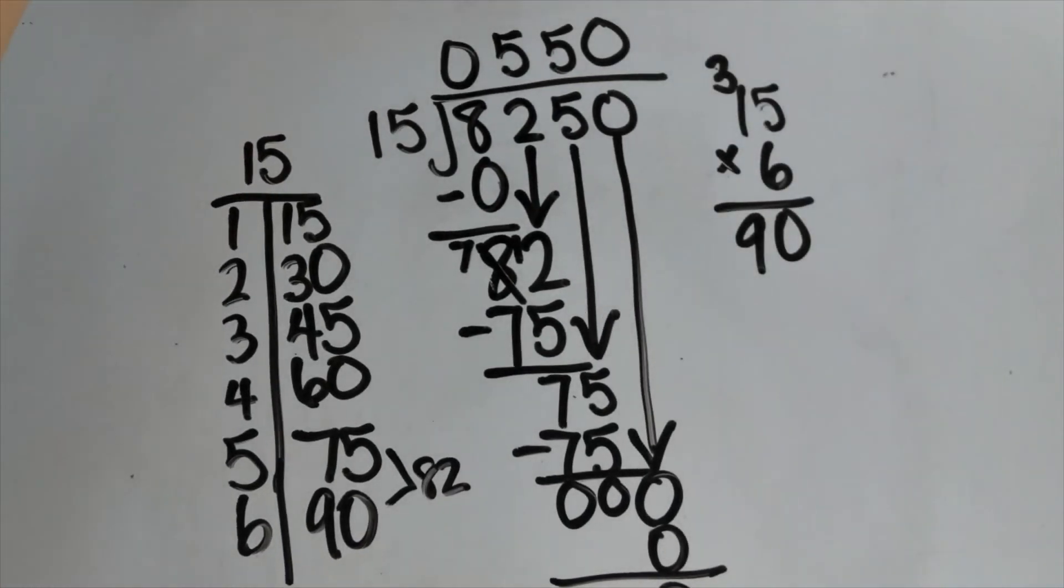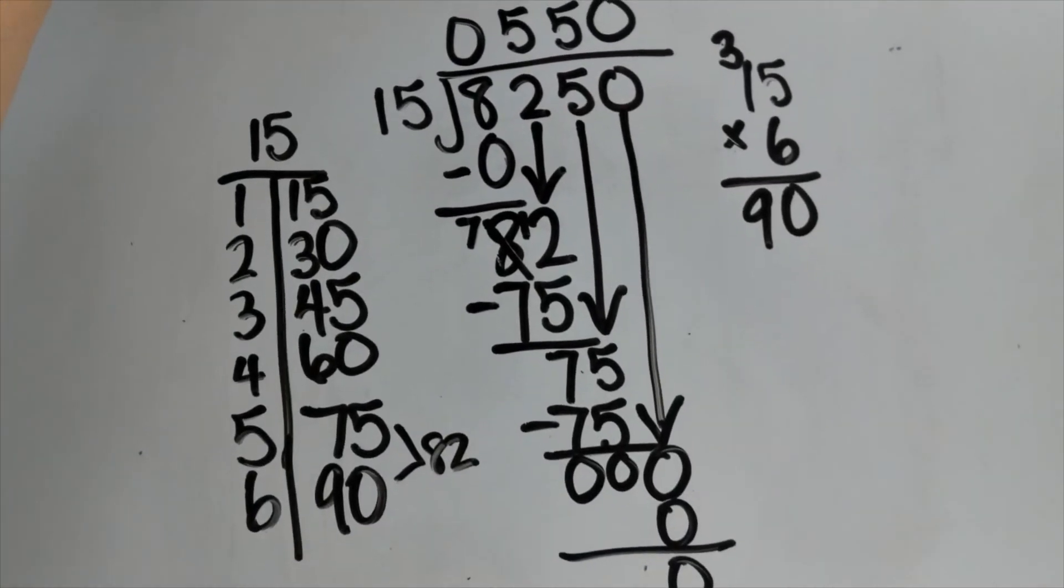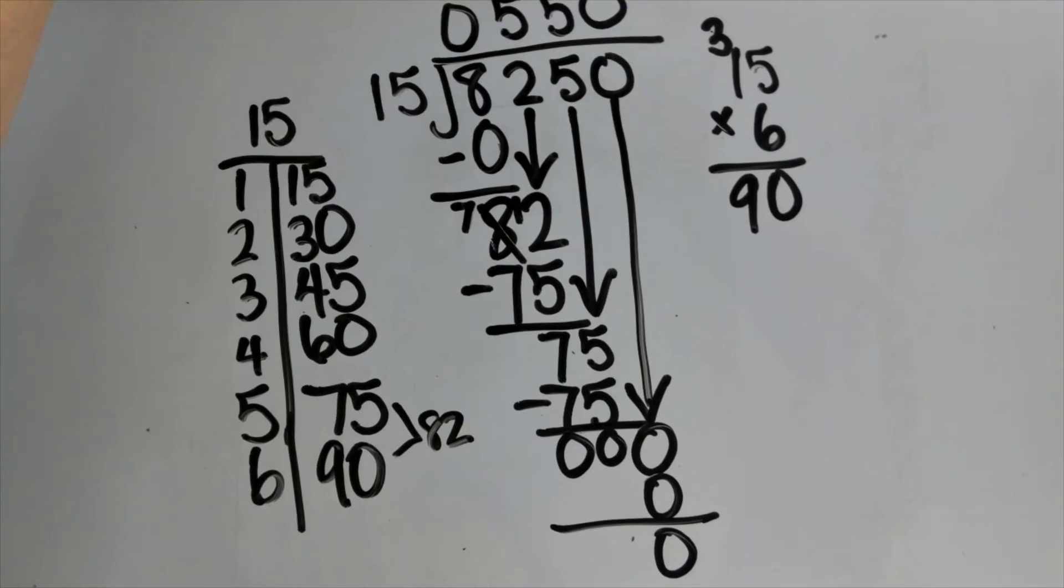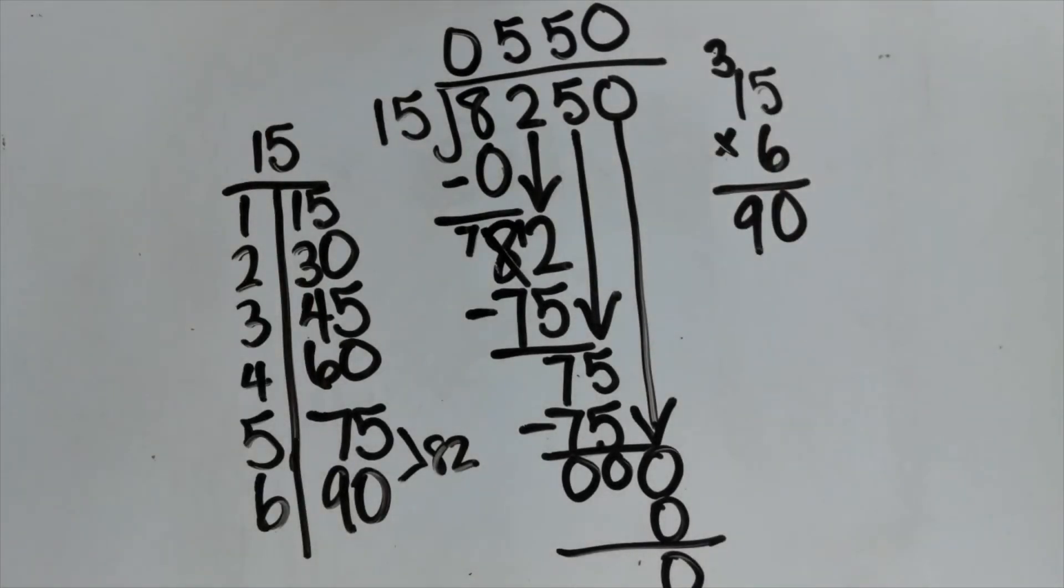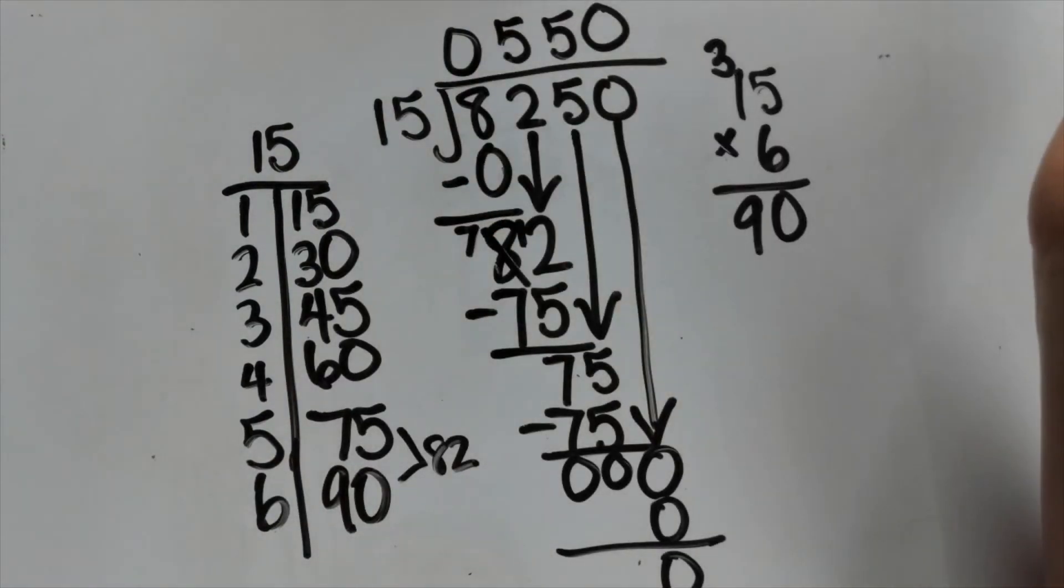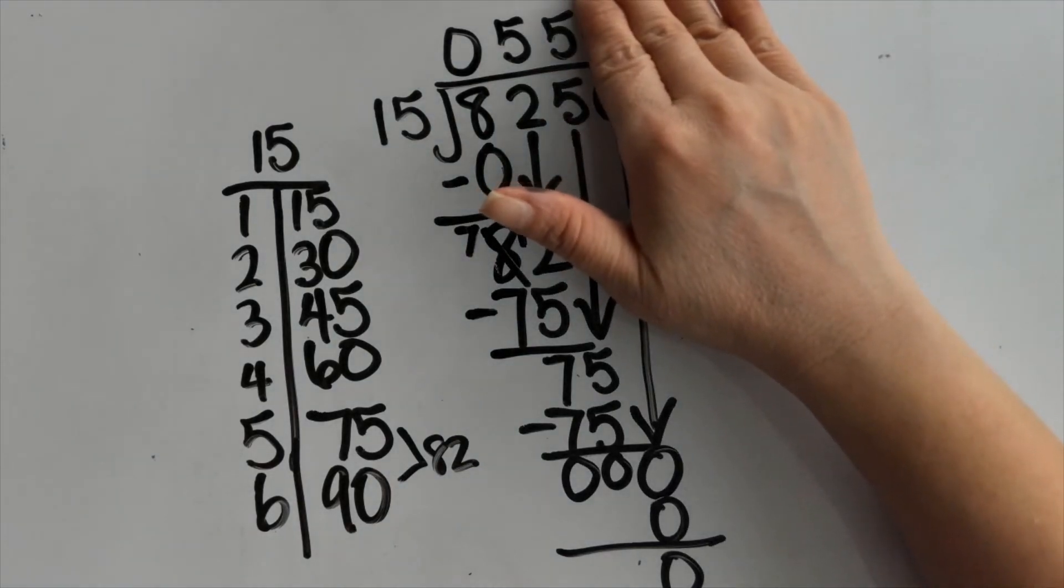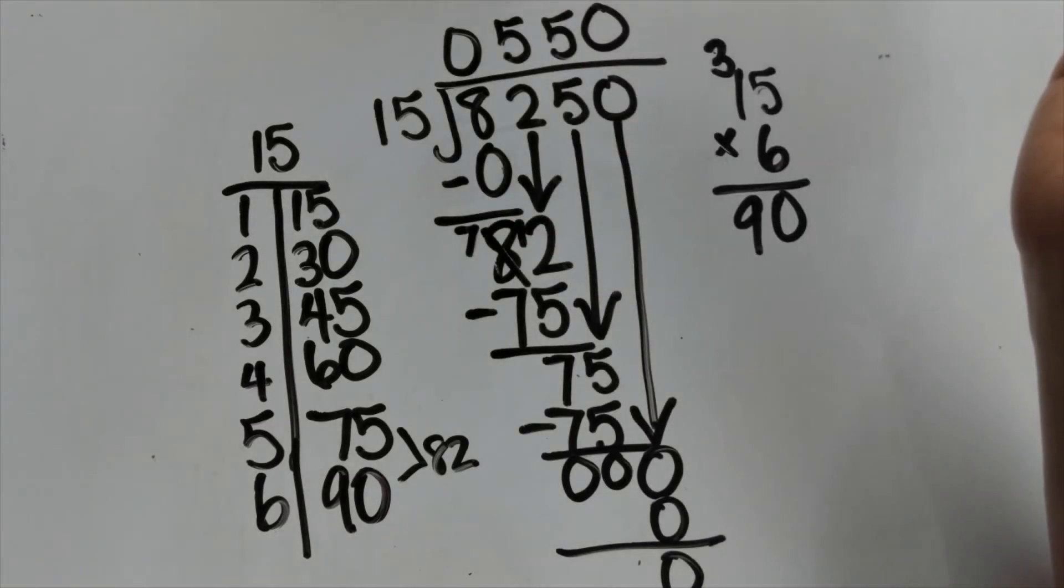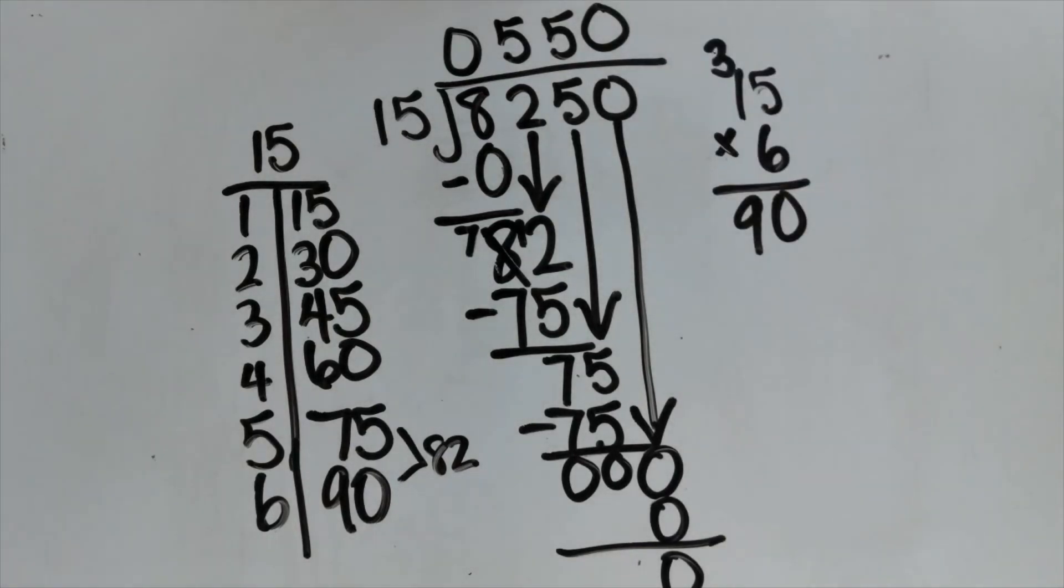You must write down that 0 as I said, because if you don't, then your answer will be wrong. This 0 at the end is very important. Imagine it as if it's money. How would you feel if instead of having $550, someone just gave you $55? There's a huge difference. $55 and $550 is not the same. I want to get my full amount, so that 0 is very important.